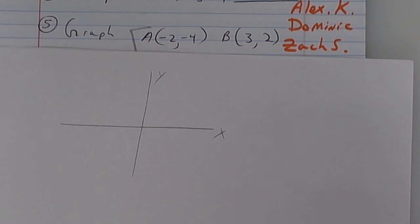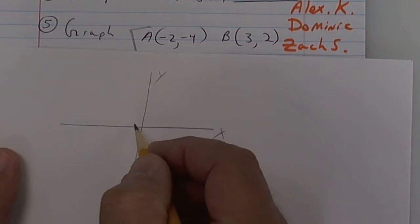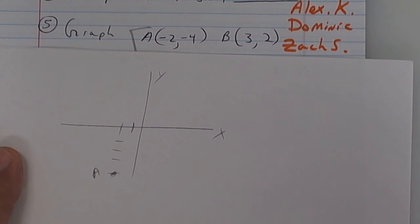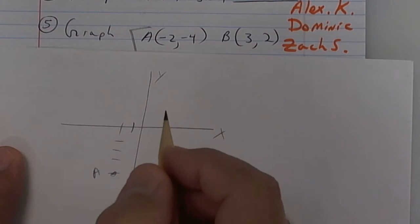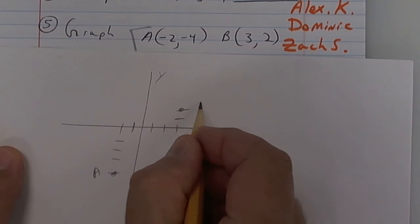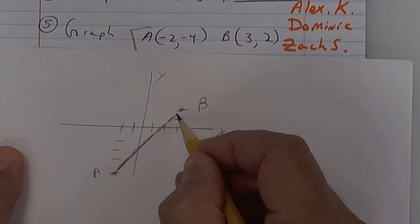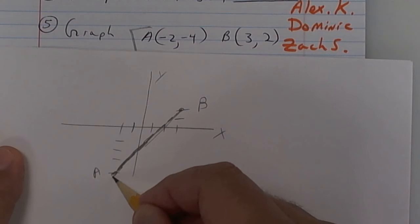So I go negative 2 and then down 4. So 1, right about here is A. And then I'm going to go over 3 and then up 2. And that's B. Connect this.